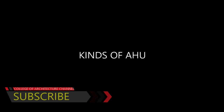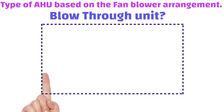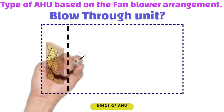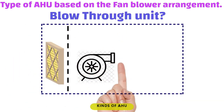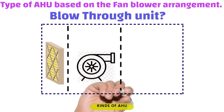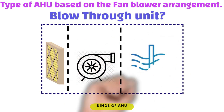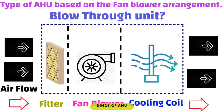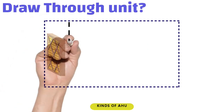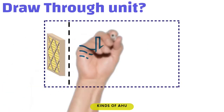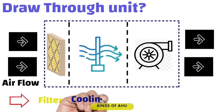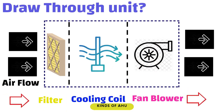Kinds of AHU. 1. Blow through: having a fan placed after the air filter, that pushes the air through the cooling and heating coil inside the AHU towards the supply duct. 2. Draw through: having a fan placed after the heating coil, that pulls the air towards the supply duct.